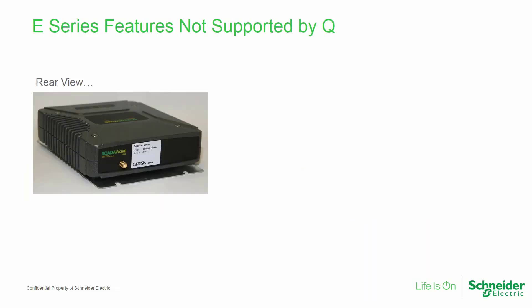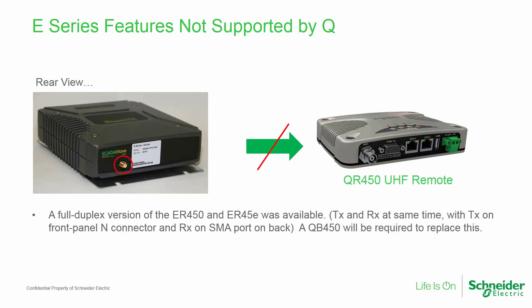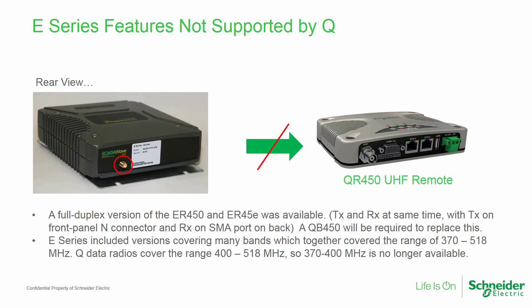The full duplex version of the ER450 and ER45E was available, which allowed the radio to transmit using the front panel N connector and receive using the rear panel SMA connector at the same time. A QB450 is, however, required to replace this model. Also, the E-Series included many frequency variants covering the range between 370 and 518 MHz. With the Q series UHF product line, two frequency variants now cover the range of 400 to 518 MHz, leaving the 370 to 400 MHz range not supported at this time.